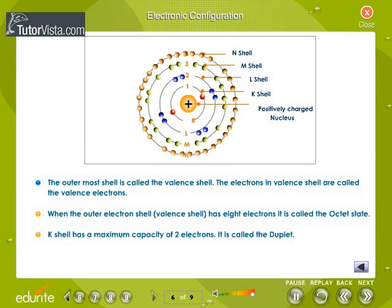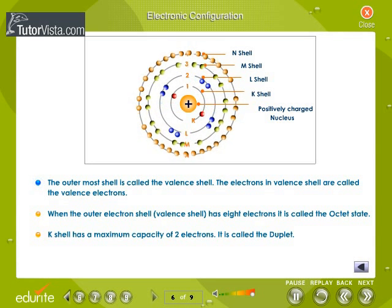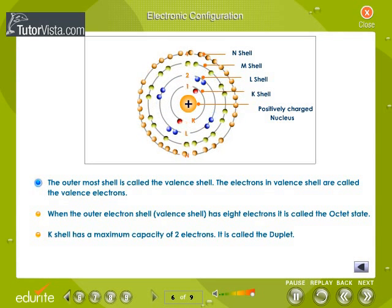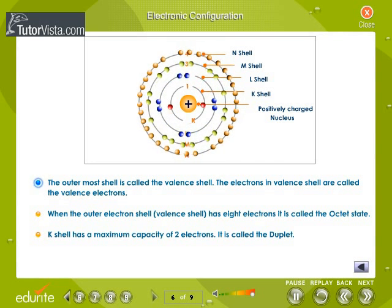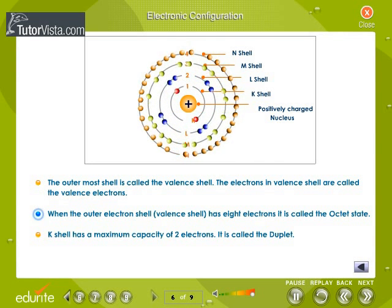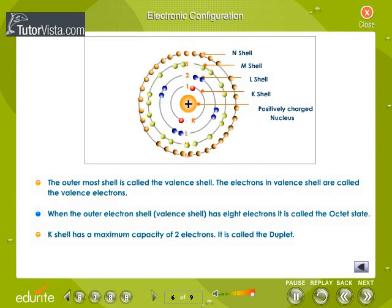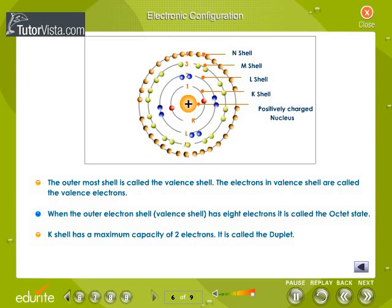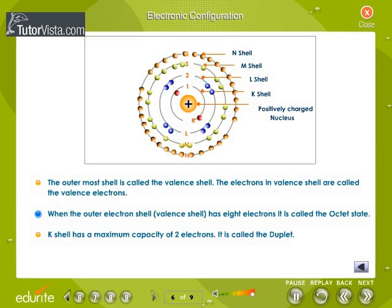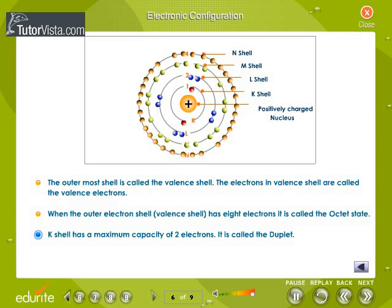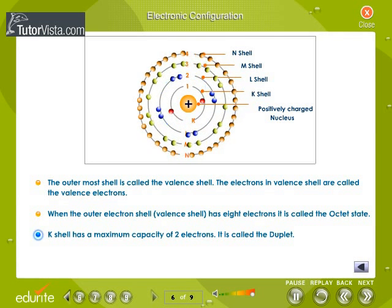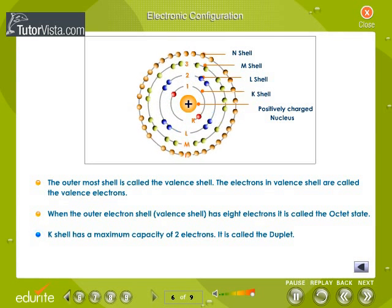The outermost shell is called the valence shell. The electrons in a valence shell are called the valence electrons. When the outer electron shell or valence shell has 8 electrons, it is called the octet state. K-shell has a maximum capacity of 2 electrons. It is called the duplet.